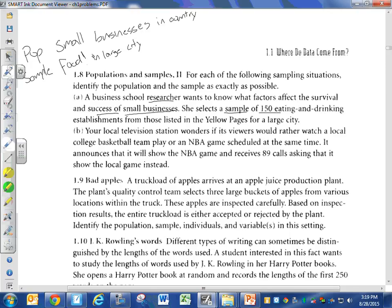Part b was a little tricky. Your local television station wonders if its viewers would rather watch a local college basketball team play or an NBA game scheduled at the same time. It announces that it will show the NBA game. It receives 89 calls asking that it show the local game instead. The population is the total viewers, everybody that could be watching the basketball game. The sample would be the 89 calls that it received. Not a great sample, it's a voluntary sample. You're not pulling a random selection of your viewers.